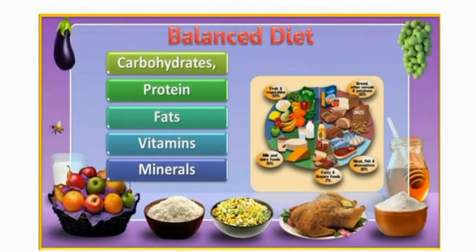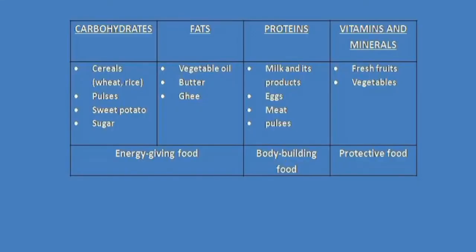What is a nutrient? A nutrient is the chemical substance that is present in food. There are five main types of nutrients: carbohydrates, fats, vitamins, minerals, and proteins. Carbohydrates give us energy to do work and to play. Some sources of carbohydrates are cereals, pulses, sweet potato, and sugar.